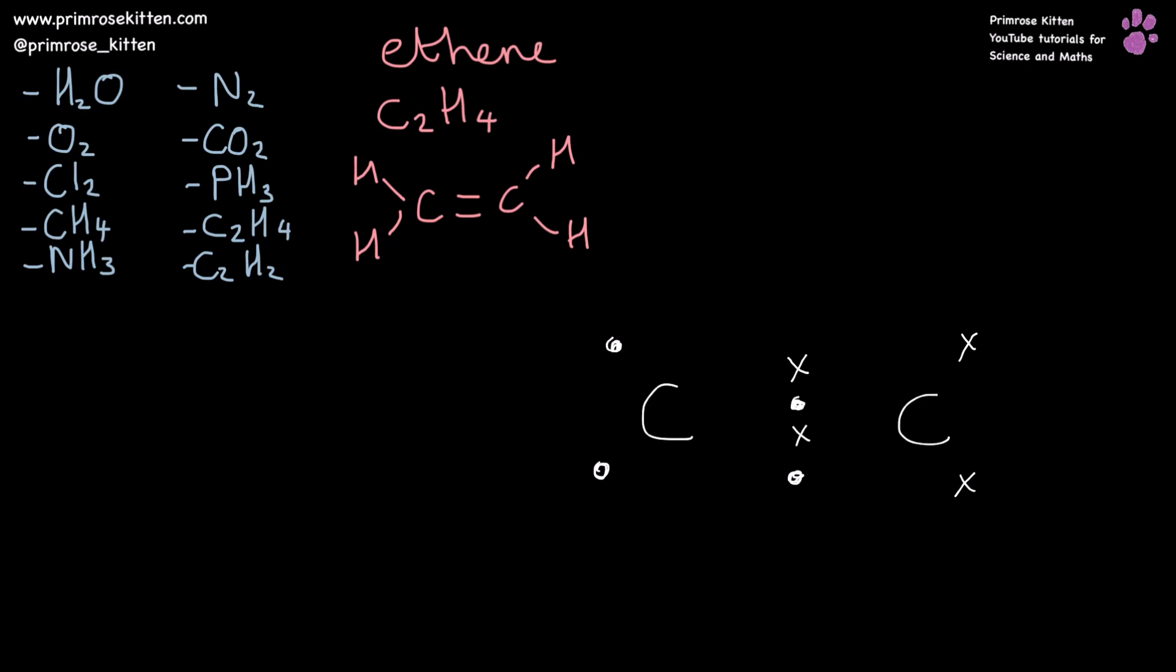And you'll notice that I've drawn one carbon with a dot, one carbon with a cross. Now what I'm going to do now is to introduce a third symbol for our hydrogens just to make it really clear where each electron is coming from.